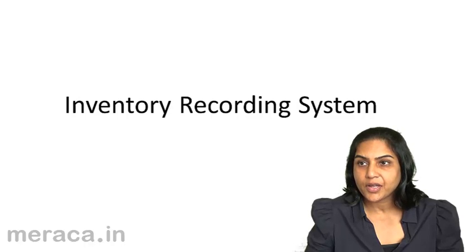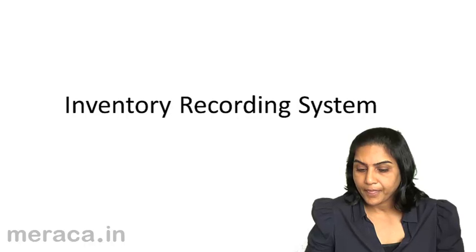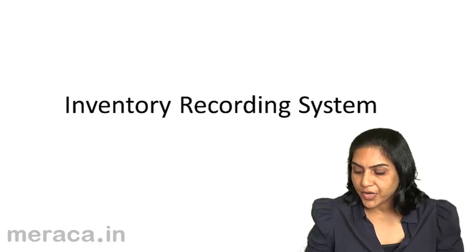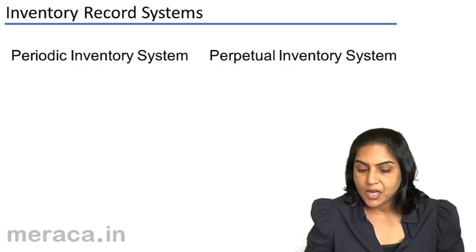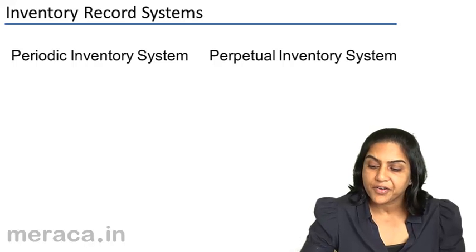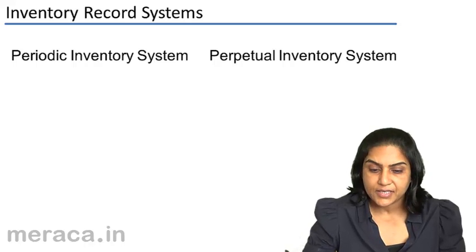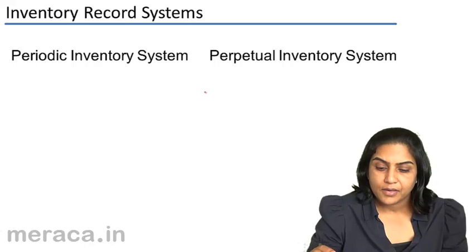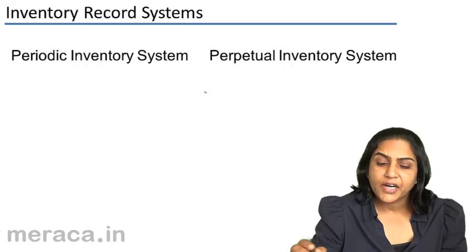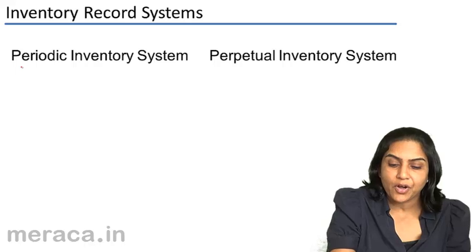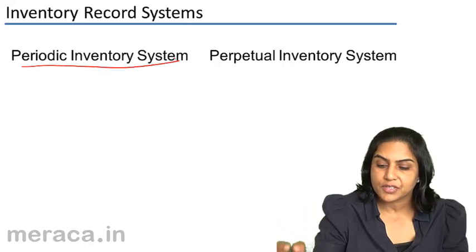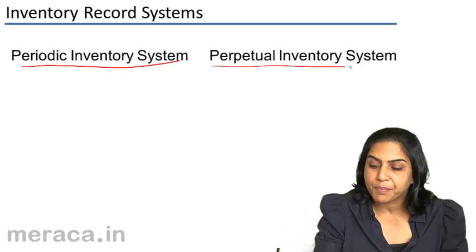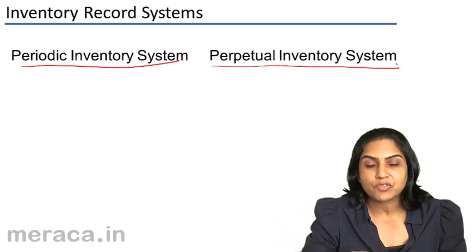Inventory Recording System. Under the cost records, how is inventory maintained? There are two systems: one is the periodic inventory system and the other is the perpetual inventory system.